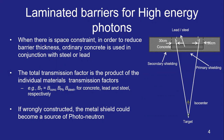One thing to be very careful about is that whenever you have a metal in the barrier, the metal could become a source of neutrons. So the concrete behind the metal should be able to absorb those neutrons. Therefore, if wrongly constructed, the metal shield could become a source of photoneutrons. One has to be careful about that.